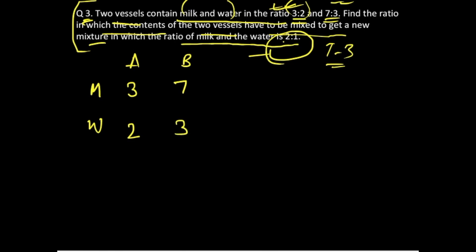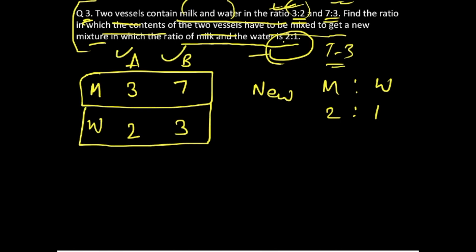In the new mixture, we are supposed to get milk and water mixed in the ratio of 2:1. We'll consider any one particular entity, either milk or water, in order to arrive at the ratio in which these two mixtures are being mixed. Let's consider milk first and see if we are able to get the solution.